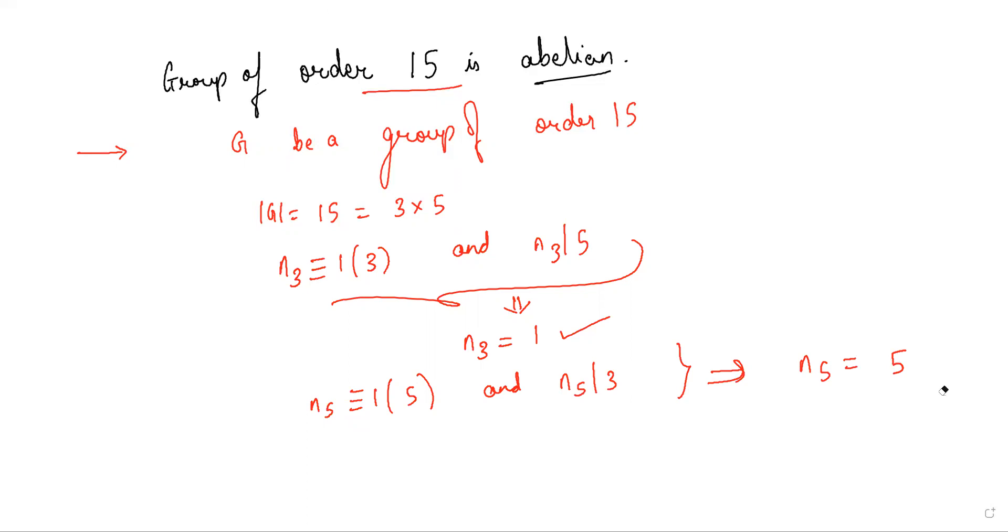So there is a unique Sylow 5-subgroup and unique Sylow 3-subgroup. So let P equal the group generated by x.